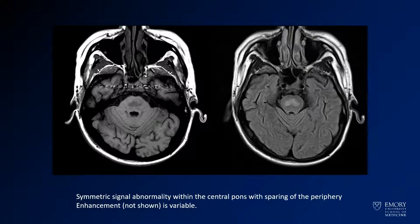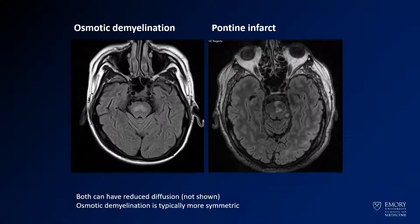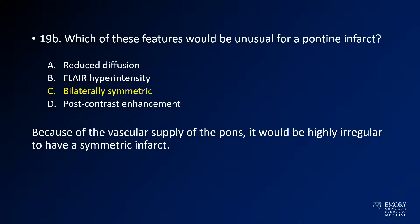Sparing of the periphery is pretty common. For comparison, the osmotic demyelination case is on the left and a pontine infarct is on the right. The osmotic demyelination case is very symmetric across the midline, whereas the pontine infarct is confined mostly to the left side. Pontine infarcts do not usually occur in a bilaterally symmetric fashion — the vascular supply of the pons makes that very unusual. So if you see a bilateral symmetric abnormality, you should be thinking more about metabolic abnormalities.